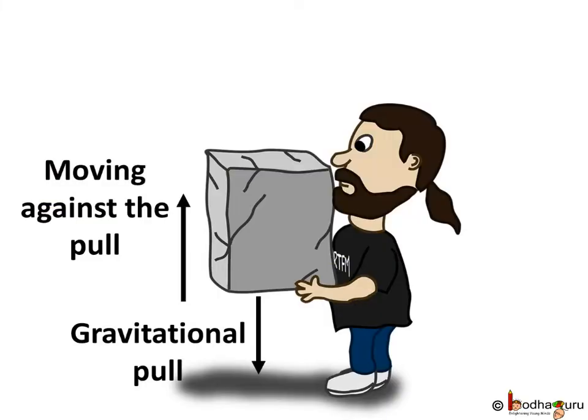Not only change of shape, an object can gain energy because of change of position too. When we lift an object, we do some work against the gravitational pull. And because of this, the object gains some energy.